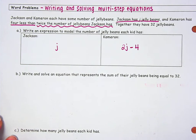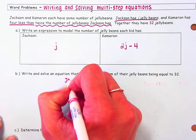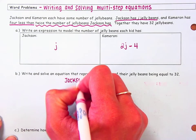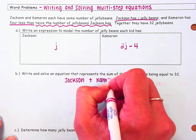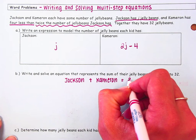In order to understand that together they have 32 jelly beans, that means that Jackson's jelly beans plus Cameron's jelly beans together equals 32.